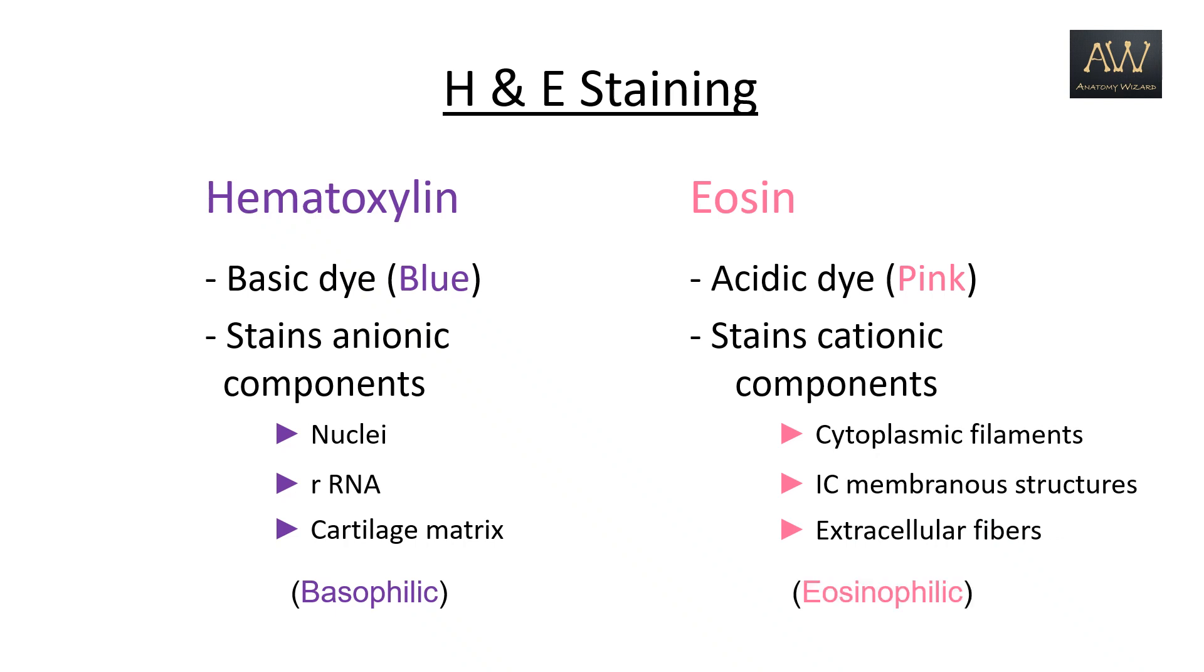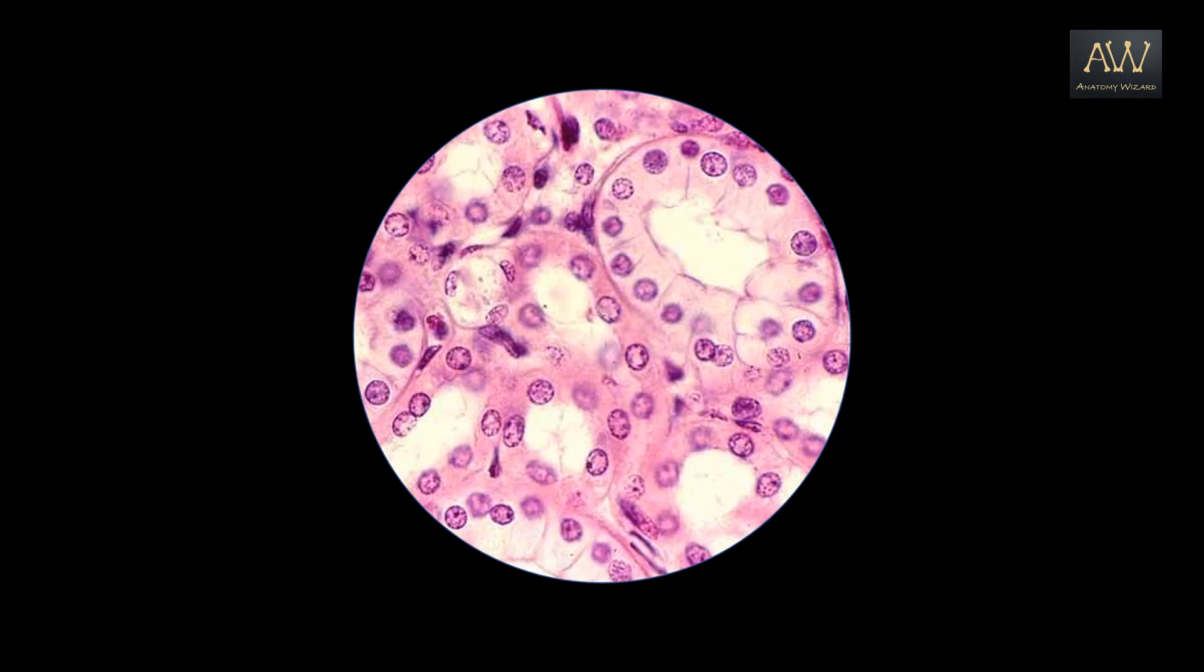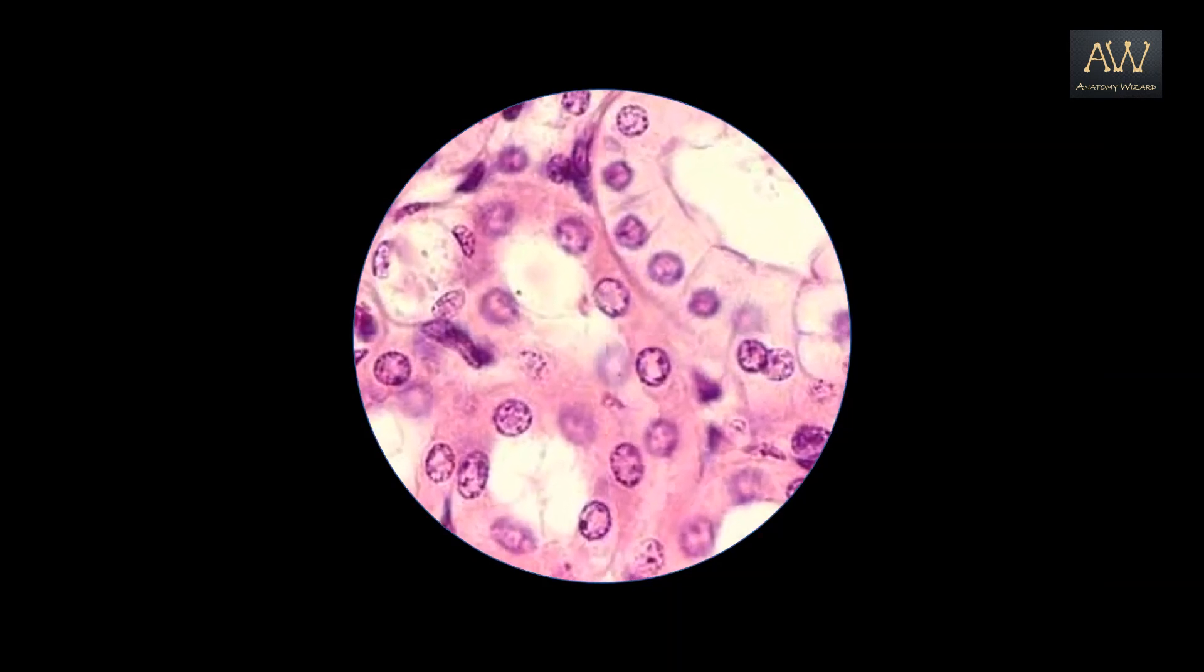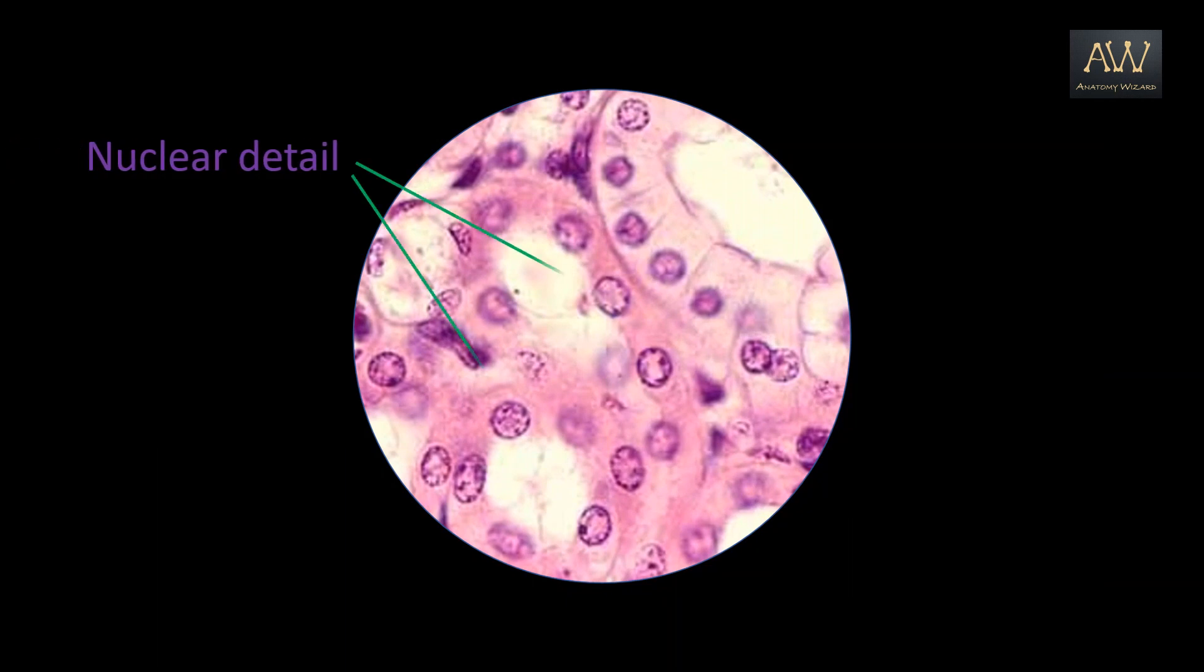But what's the use of coloring these structures with these dyes? The reason is that the blue hematoxylen selectively enhances the nuclear details which can then be contrasted against a pink cytoplasmic background that is stained by eosin. Thus we can actually not only distinguish cells from one another but even their intracellular components.